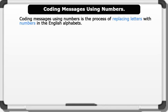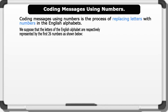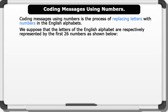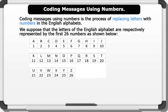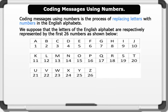Therefore, we can equally use numbers to represent letters. We suppose that the letters of the English alphabet are respectively represented by the first 26 numbers, as shown below. Note that we put a comma between the numbers representing each letter. Let's see an example.